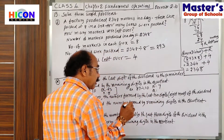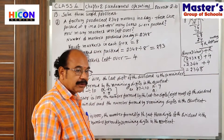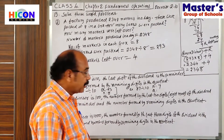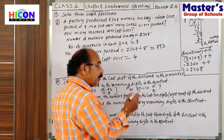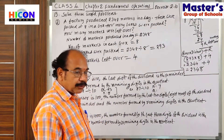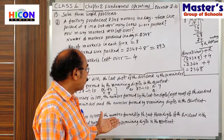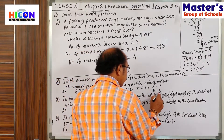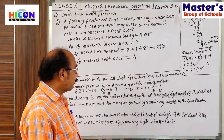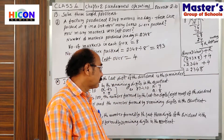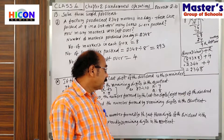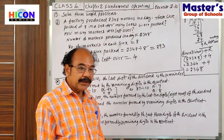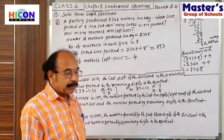Next, the number formed by the remaining digit. Here, what is the remaining digit? 8 only. So, the number formed by the remaining digit is the quotient. 8 is the quotient. You can check your result. 8 tens is 80, plus 7, equals 87.